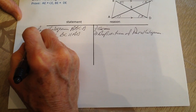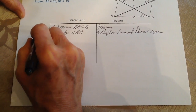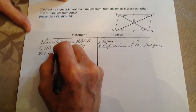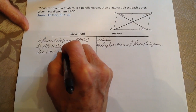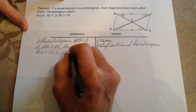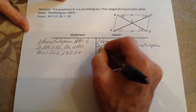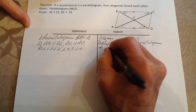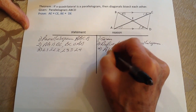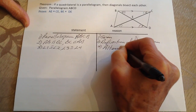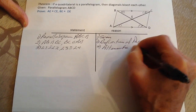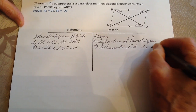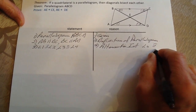So now we have step three: angle one is congruent to angle two, and likewise angle three is congruent to angle four, because if we have parallel lines, then the alternate interior angles are congruent.